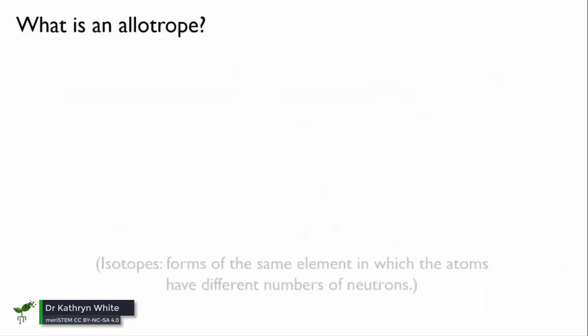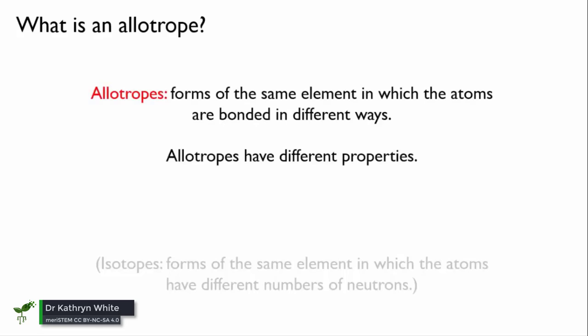The answer is yes, we can. And when you get different forms of the same element that have different bonding, we call them allotropes.